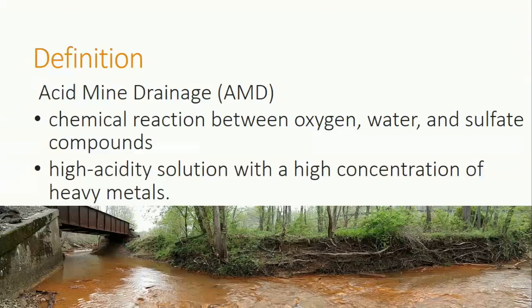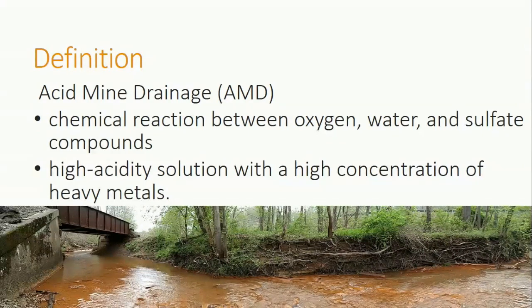Acid mine drainage is the result of a chemical reaction between oxygen, water, and sulfate compounds such as pyrite, creating a high acidity solution with a high concentration of heavy metals. Watersheds with acid mine drainage tend to have portions of the stream that are orange, like this picture, or milky white, depending on the heavy metals present.